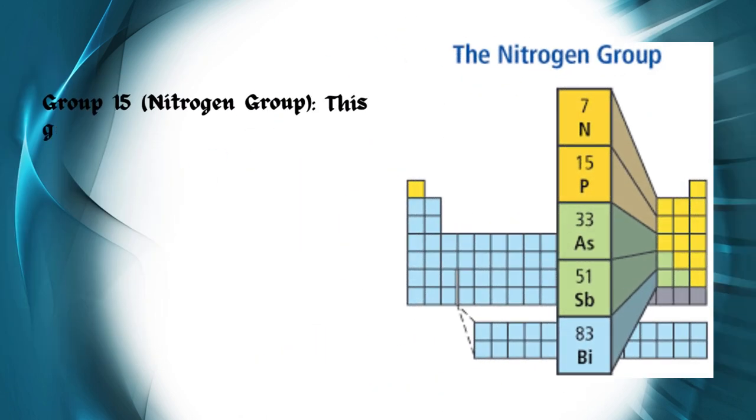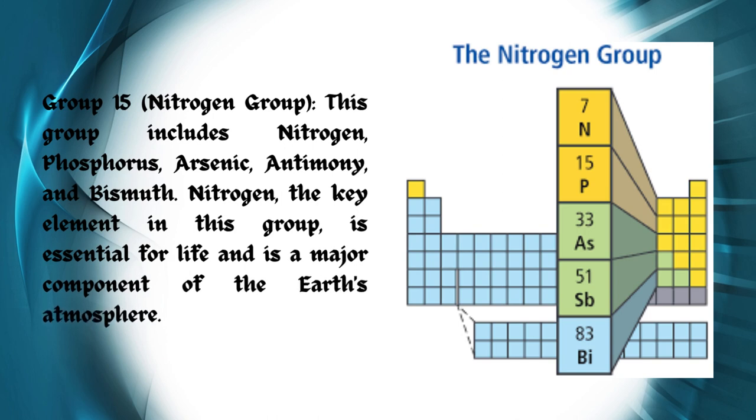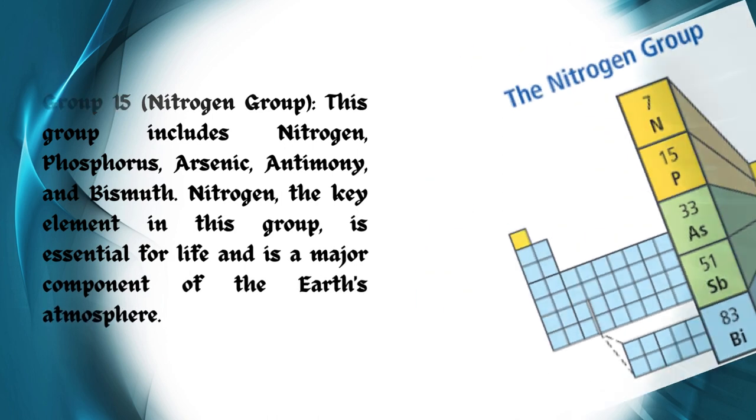Group 15, Nitrogen Group: This group includes nitrogen, phosphorus, arsenic, antimony, and bismuth. Nitrogen, the key element in this group, is essential for life and is a major component of the Earth's atmosphere.